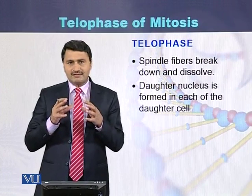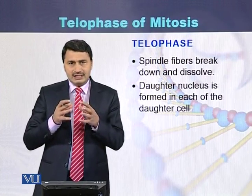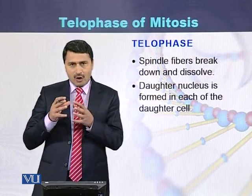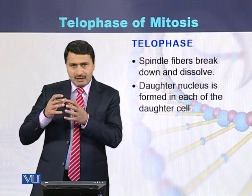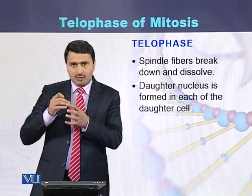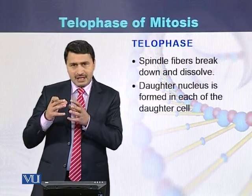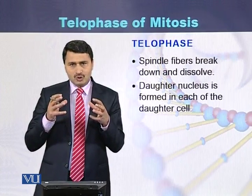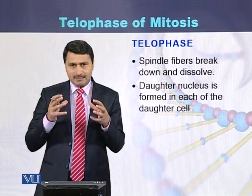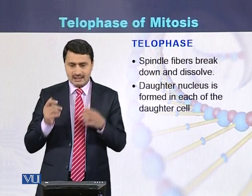The fourth event is that the daughter nucleus is now present at the poles. Around the chromosomes, the nuclear membrane appears, and two daughter nuclei are present at the poles of the cell.